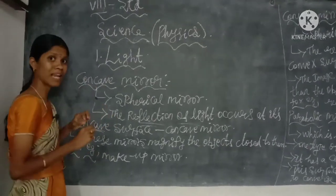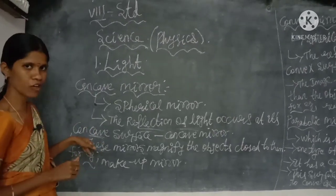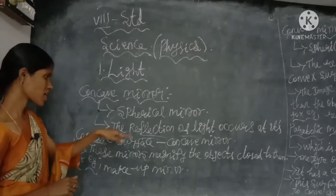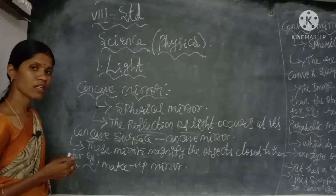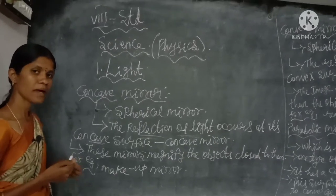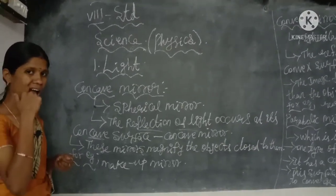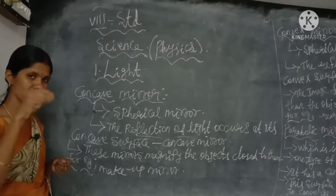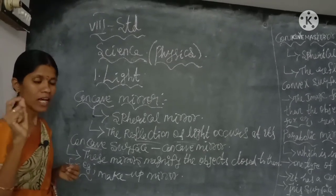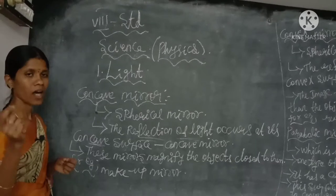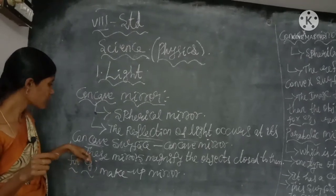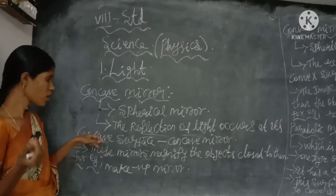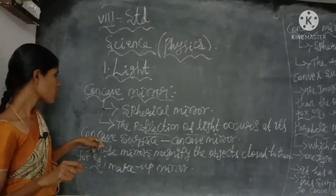The word 'concave' means pallam or kuli in Tamil — that is, a cave or hollow. So it is referred to as a concave mirror. For example, if we take an eating spoon, in the middle there is a cave — it is thin in the middle and thicker at the edges. That concave, hollowed surface is referred to as a concave surface.